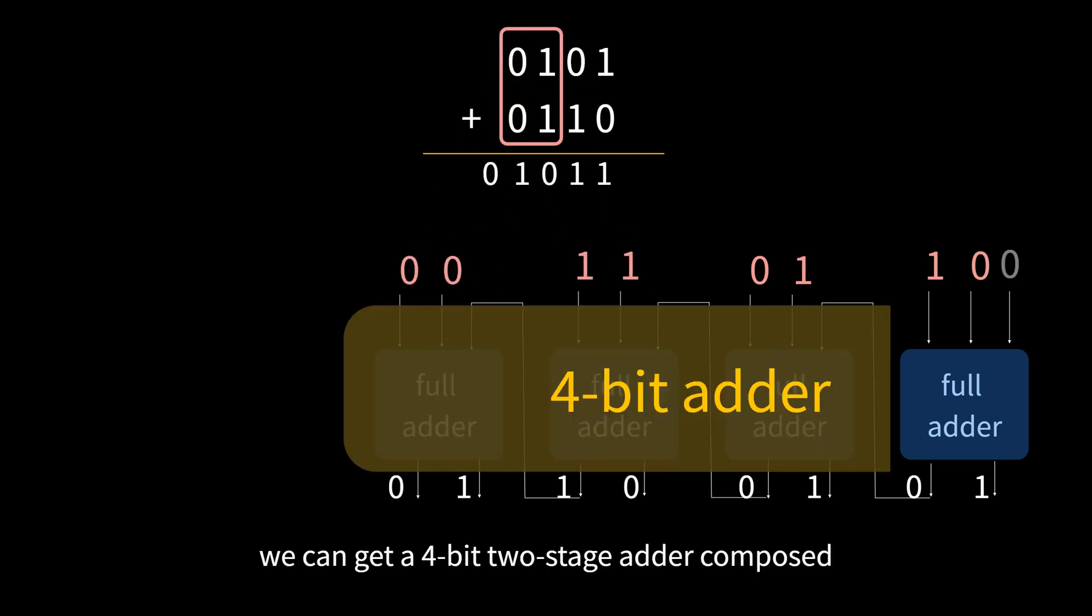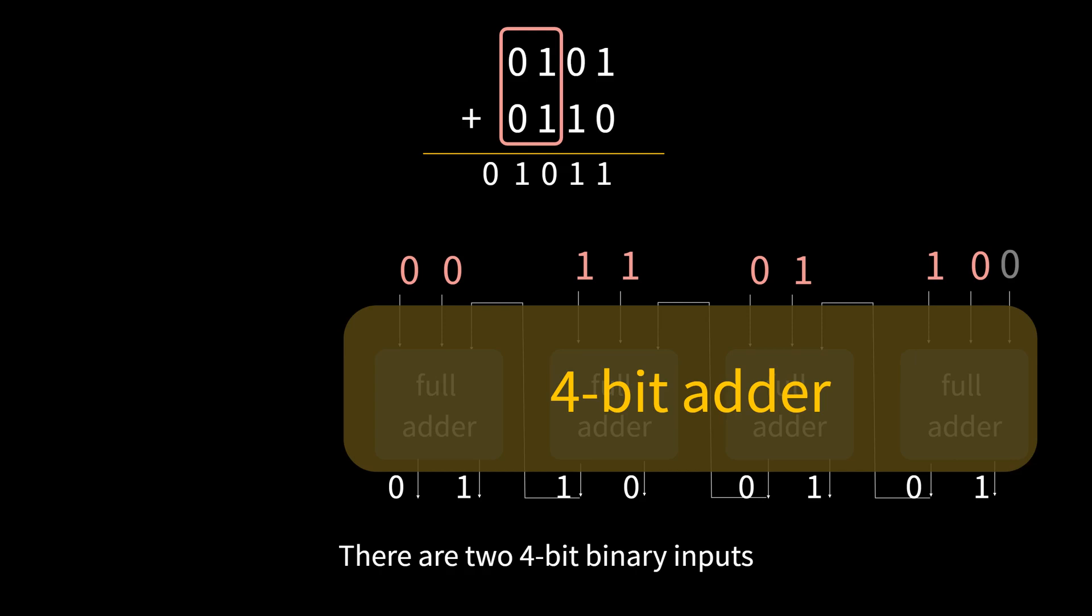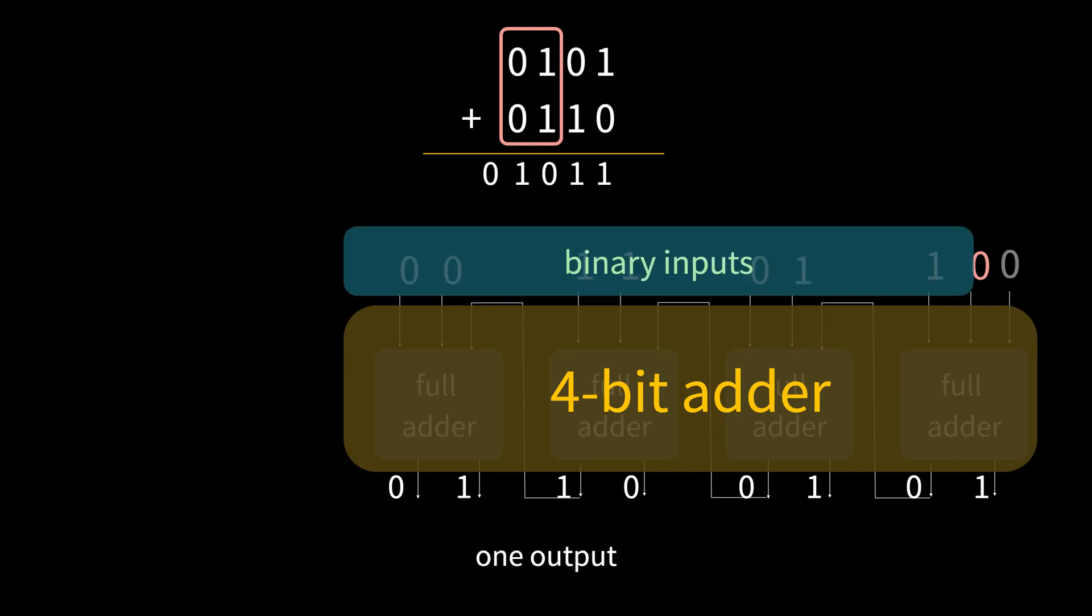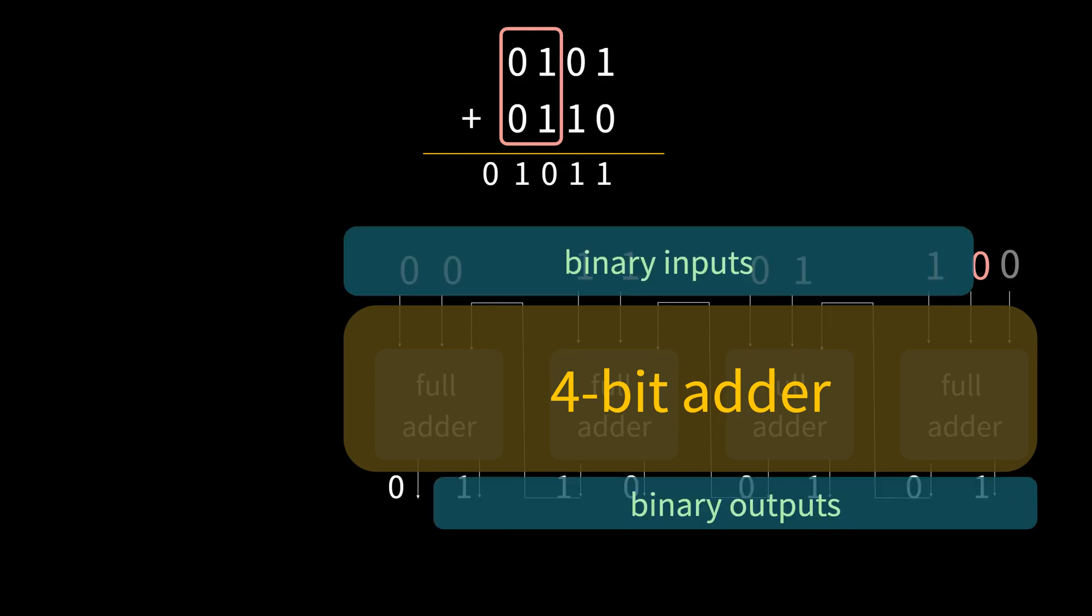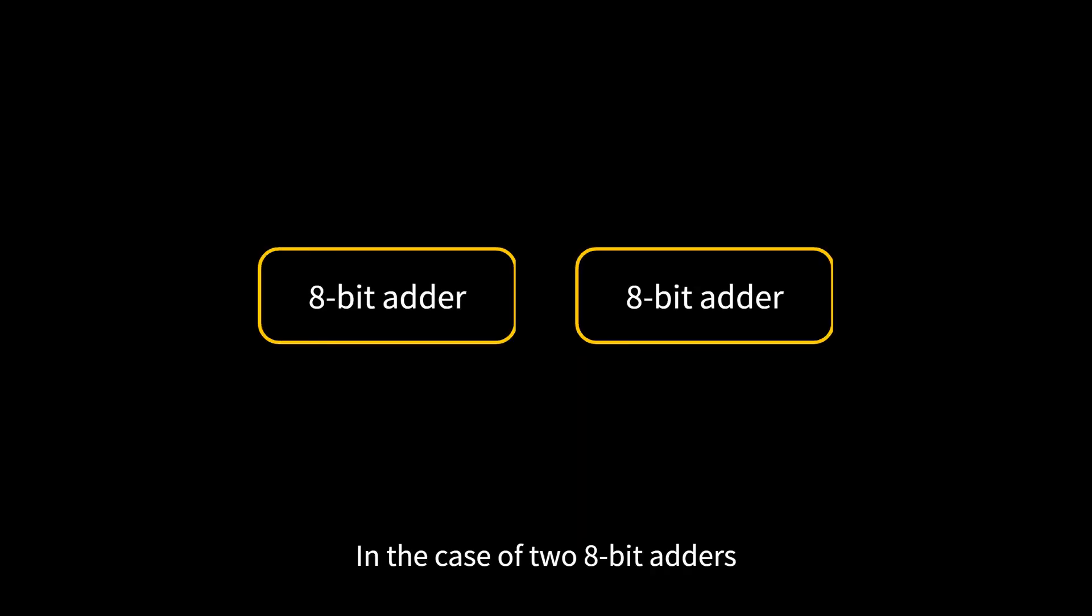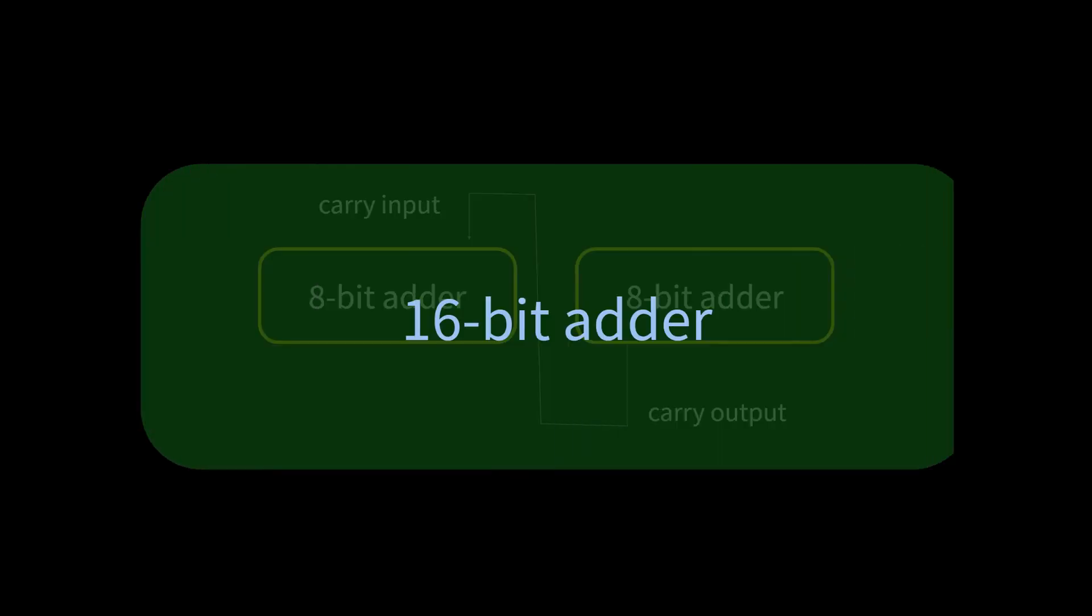By analogy, we can get a 4-bit adder, composed of 4 full adders. There are two 4-bit binary inputs, one output, one carry bit, and one carry output. In the case of two 8-bit adders, the low 8-bit carry output is used as the high 8-bit carry input. It can become a 16-bit adder.